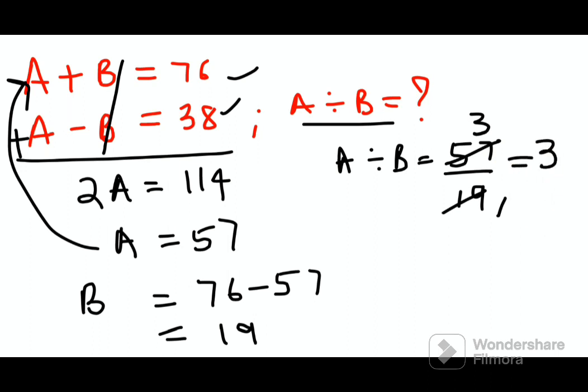Now students please understand a lot of you don't like the simultaneous equations. Then in that case what you could have done is you would have used this particular equation and made B equals A minus 38 and you could have substituted this in the first equation and gotten your answers. Still both the methods are absolutely fine. You can stick to whatever method you are comfortable with.